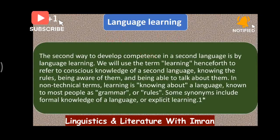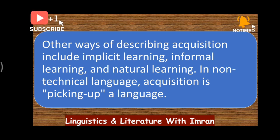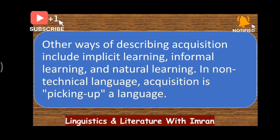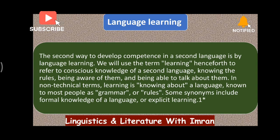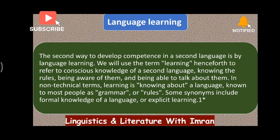Now we have language learning. That was language acquisition — implicit learning, informal learning, natural learning, or picking up a language. When you pick up a language unconsciously or subconsciously without knowing the rules of a language, you acquire a language through a subconscious process. On the other hand, language learning requires proper instruction. It is a kind of conscious process — if acquisition is unconscious or subconscious, then learning would be a conscious process.